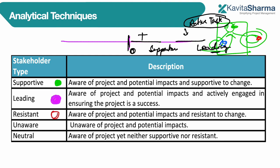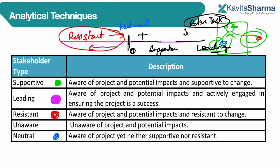Then there are resistant stakeholders. Resistant means their attitude is negative — zero is neutral. Resistant stakeholders have an attitude that they want your project to not be successful at all. They will say wrong things, mislead people, and create fallacies. These people need to be handled — their communication should be reduced, or they should be converted to at least a neutral position. These are the people we have to manage.